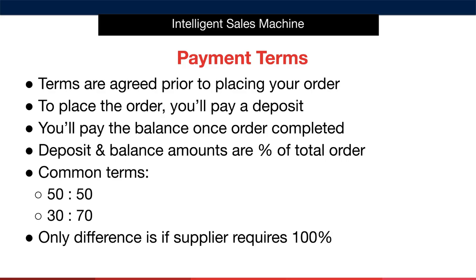The first thing to say about payment terms is that they are agreed prior to placing your order. Generally your supplier will dictate these and it'll be up to you to accept them to order and get going with production. You'll generally be required to only pay a deposit, then pay the balance once the order is completed. The most common payment terms are 50-50, that is 50% of the order value is required as a deposit with the remaining 50% required when production is complete.